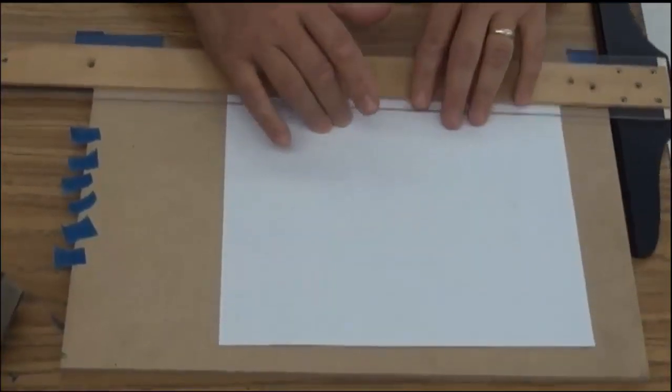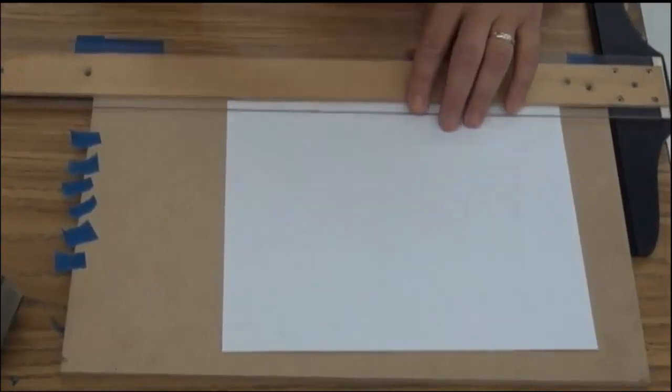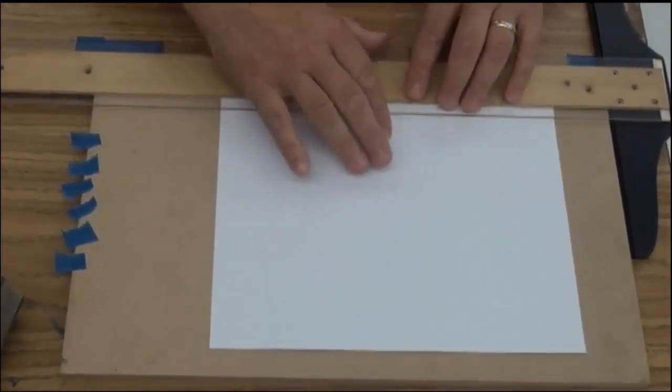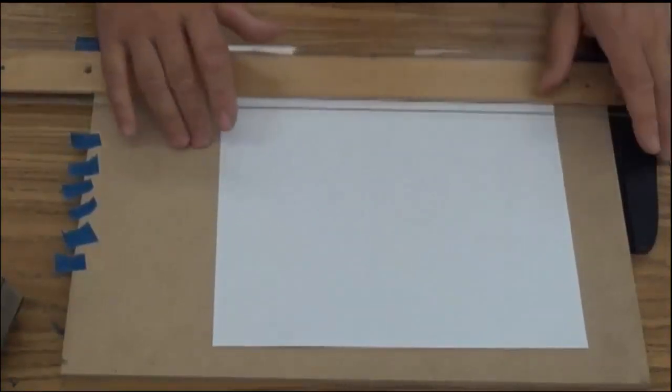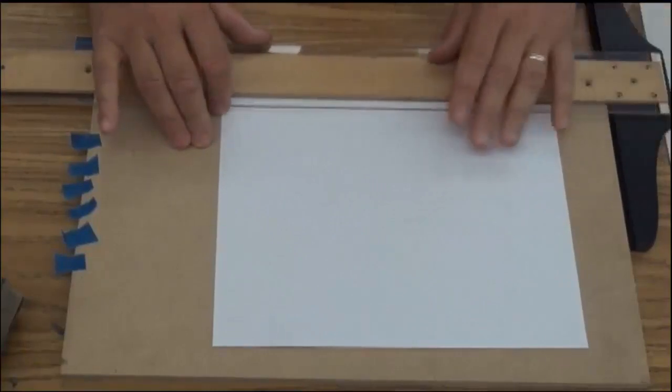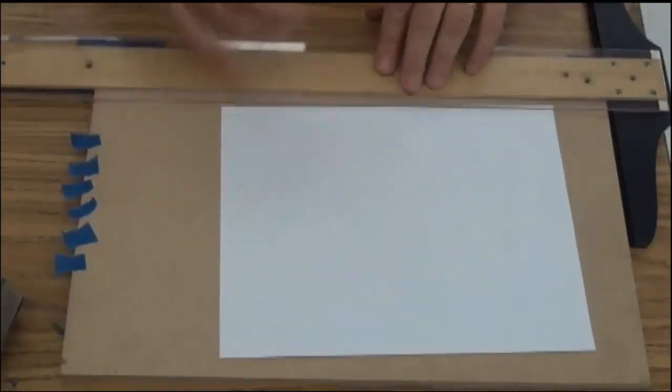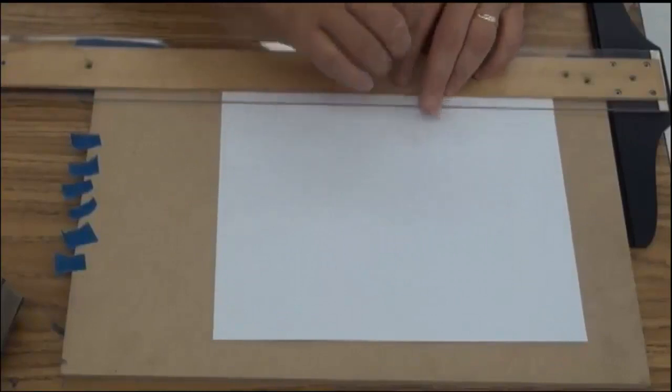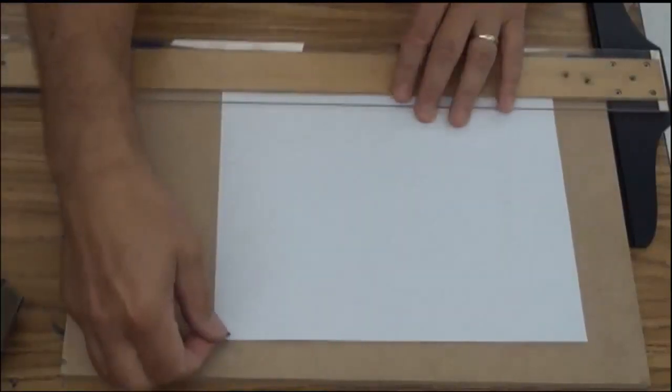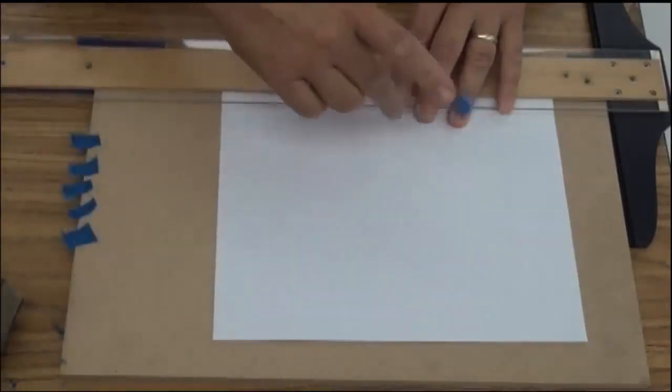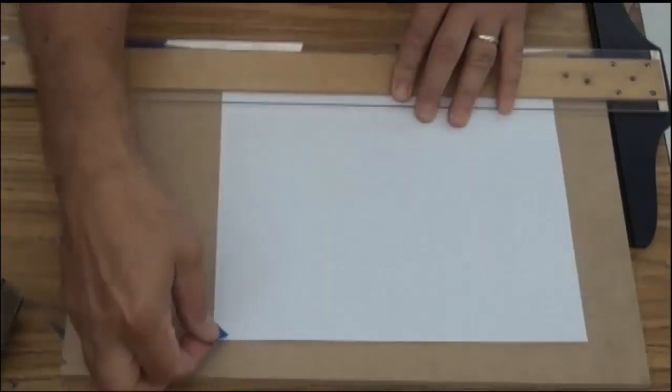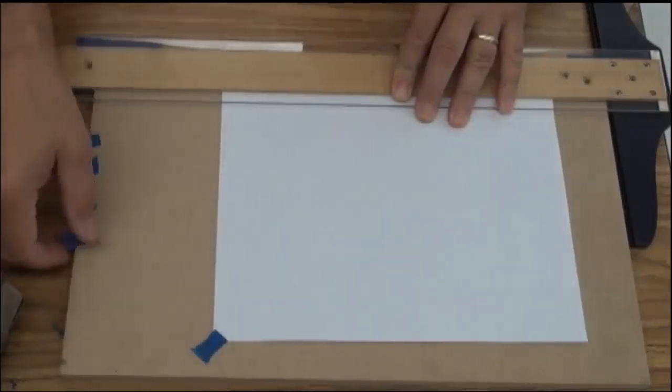Now if you have the money and have a drafting supply house in your community, you can go and get what's known as drafting dots. It's basically masking tape that's cut in the shape of a dot that you can peel off and use on your drawings. It works really well.